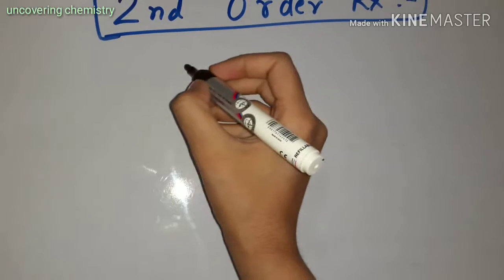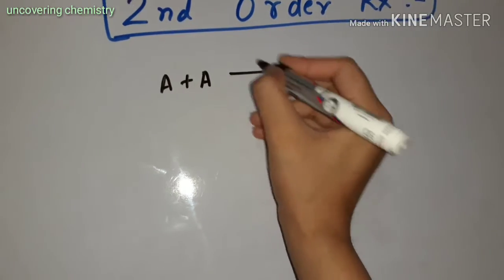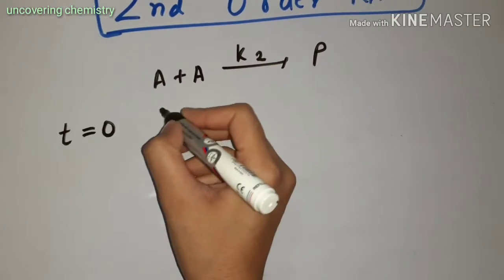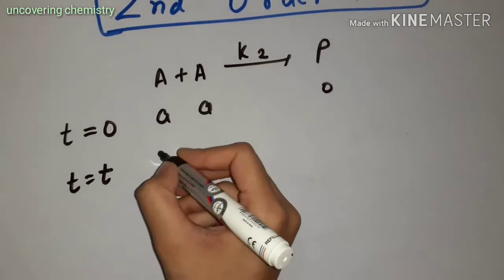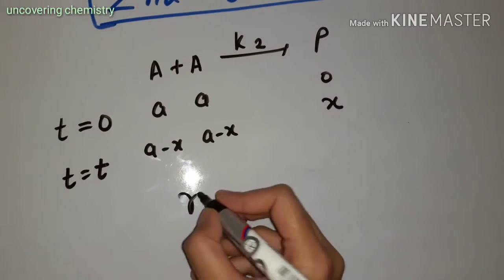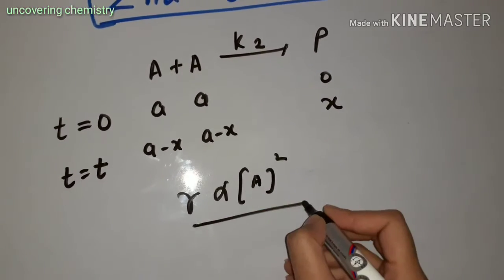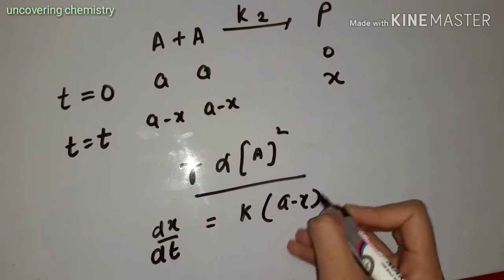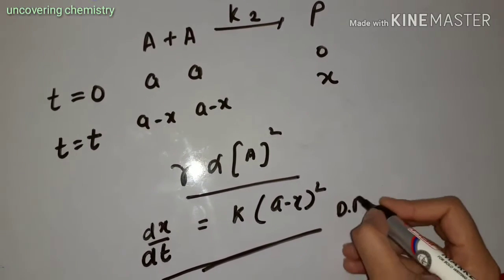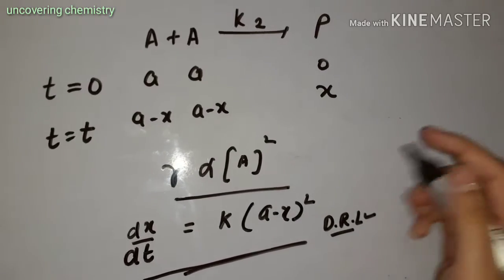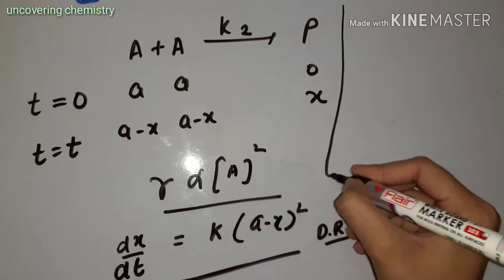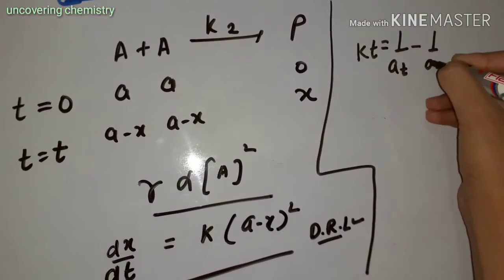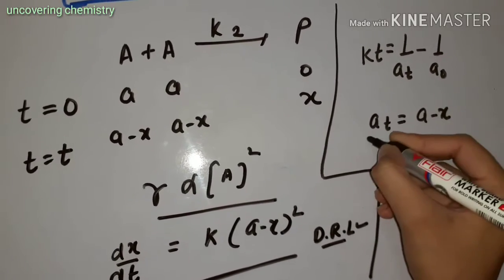Now comes the second order reaction. Consider an elementary reaction where at time 0 the concentration is A, and at time T the concentration is A minus X. The rate is directly proportional to the square of concentration. This is the differential rate law equation for the second order reaction. Solving this equation gives: KT equals 1 upon AT minus 1 upon A-naught, where AT equals A minus X.